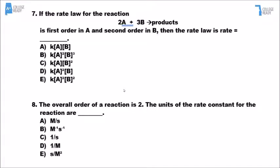Number 7 is just interpreting what you read. If it's first order with respect to A, then A would have an exponent of 1. If it's second order with respect to B, then B would have an exponent of 2. Only one of the answer choices — choice C — has A with an exponent of 1 and B with an exponent of 2.